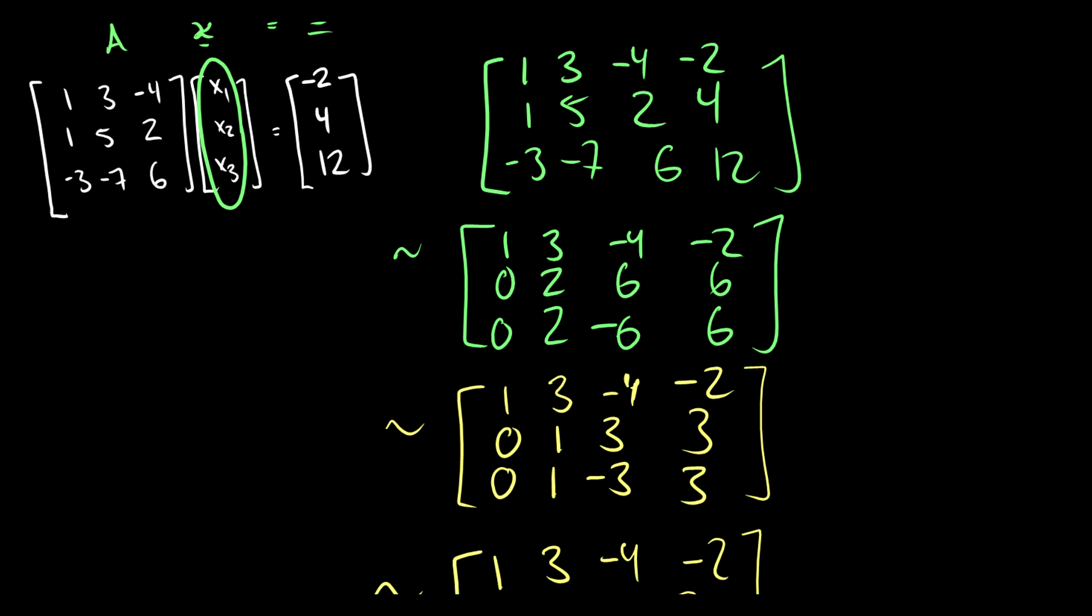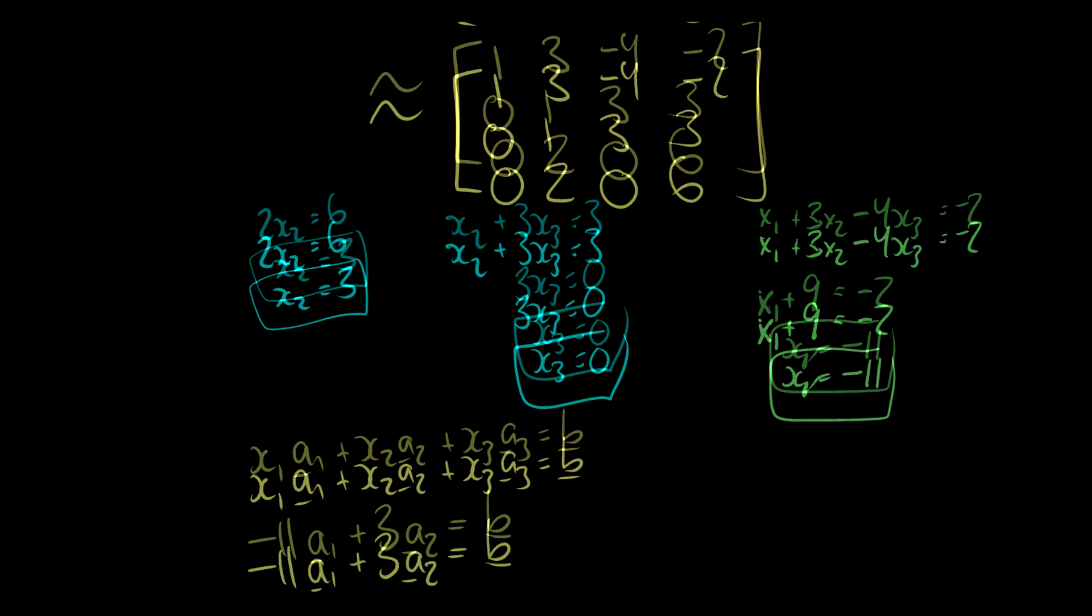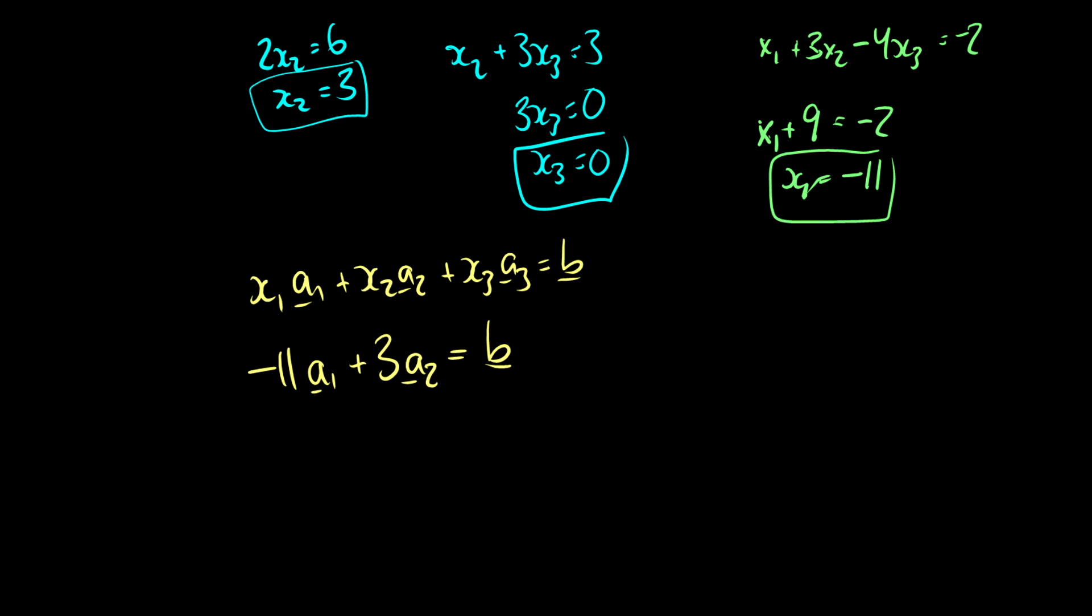And we can take a look at what the original vectors were. So we have 1, 1, negative 3 is a1, 3, 5, negative 7 is a2. We don't need to worry about a3. And this equals our vector b, negative 2, 4, 12. I could put those numbers in here, but this is a valid solution for x1, x2, and x3, because that's what we wanted to find. We wanted to find the vector x that tells us what it was. So that would be the vector negative 11, 3, 0.